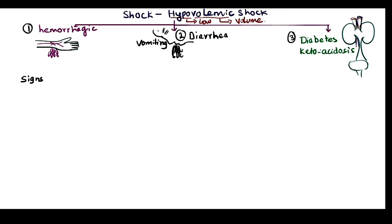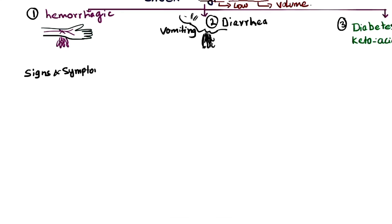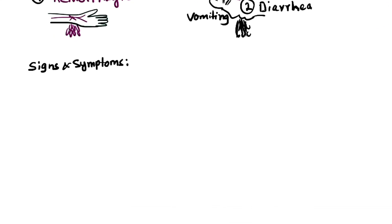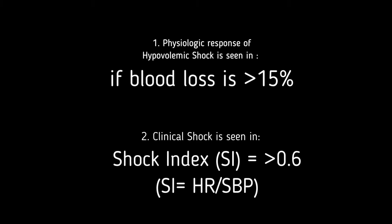Coming to the signs and symptoms of hypovolemic shock: when do we consider hypovolemic shock? There are two criteria. One is loss of blood more than 15%. The other is shock index, which is calculated as heart rate divided by systolic blood pressure. If the shock index is more than 0.6, that is considered a clinical shock.